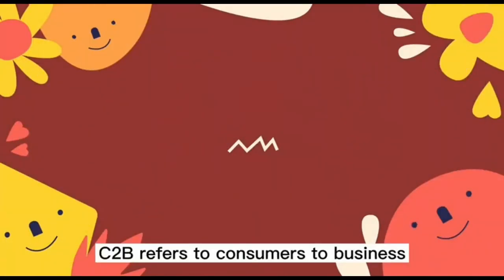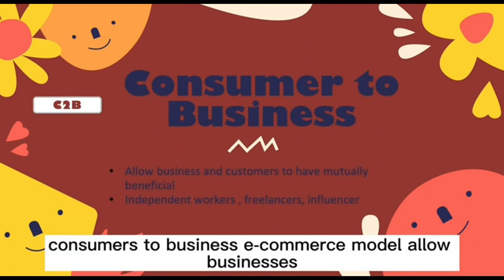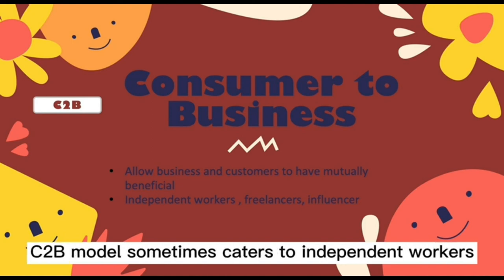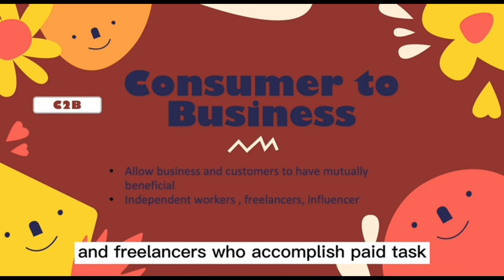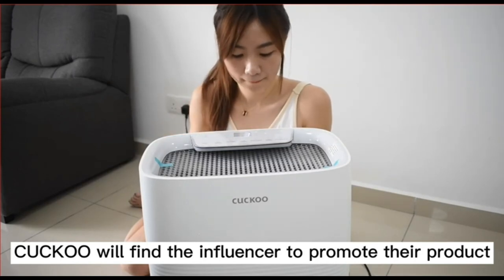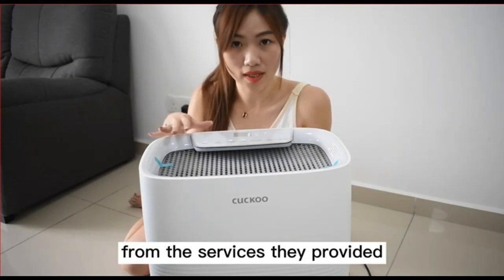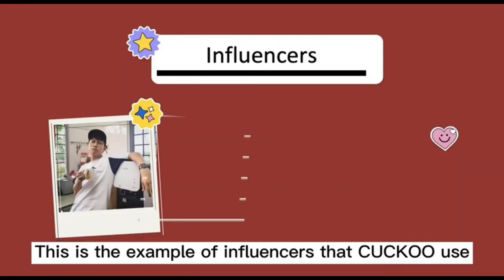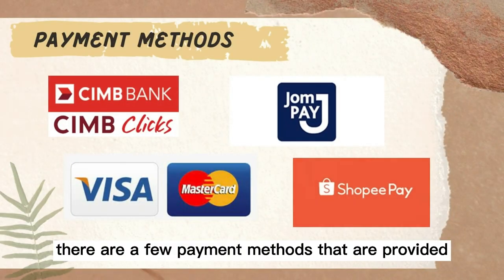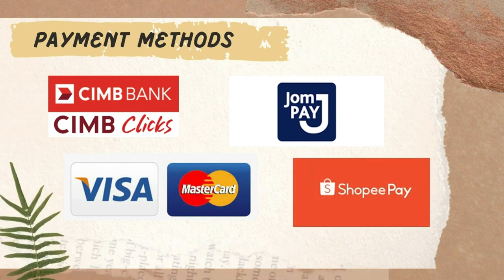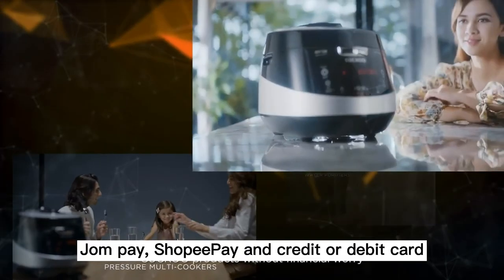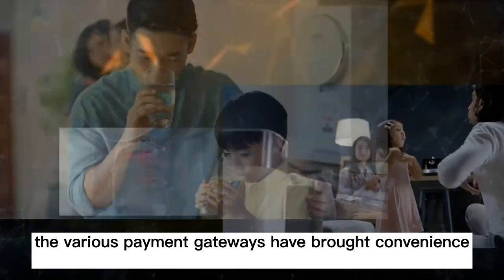C2B refers to Consumer-to-Business e-commerce, a model that allows businesses and consumers to have a mutually beneficial relationship. The C2B model sometimes caters to independent workers and freelancers who accomplish paid tasks for a business. For example, Kuku finds influencers to promote their products and provides a return for the services they provide. For payment methods, Kuku provides online banking, JomPay, ShopeePay, and credit or debit card. These various payment gateways bring convenience for customers.